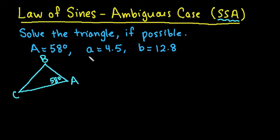What matters is that the side opposite goes across from the angle. So like side a has to go across from angle A, so this would be 4.5. Side b has to go across from angle B, so b is 12.8. And then little c would go across from C.